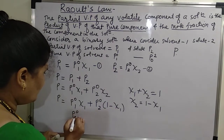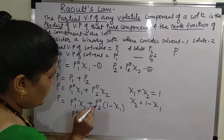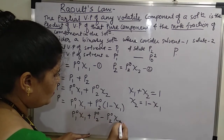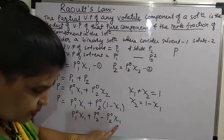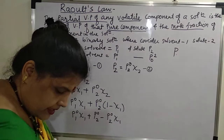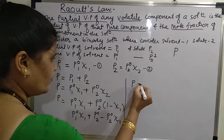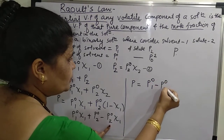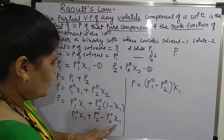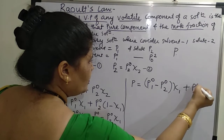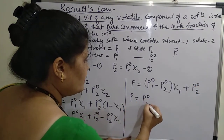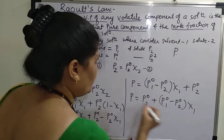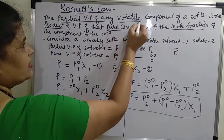Simplifying: P equals P01·X1 plus P02 minus P02·X1. Taking X1 as the common factor, P equals (P01 minus P02)·X1 plus P02, which rearranges to P equals P02 plus (P01 minus P02)·X1. This is the expression for Raoult's Law when the solute is volatile.